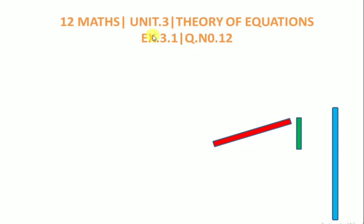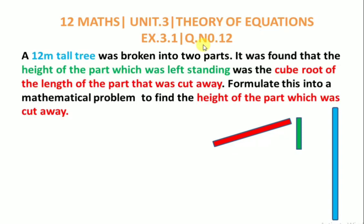12th standard, max unit 3, theory of equations, exercise 3.1, question number 12. A 12 meter tall tree was broken into two parts. It was found that the height of the part which was left standing was the cube root of the length of the part that was cut away. Formulate this into a mathematical problem to find the height of the part which was cut away.